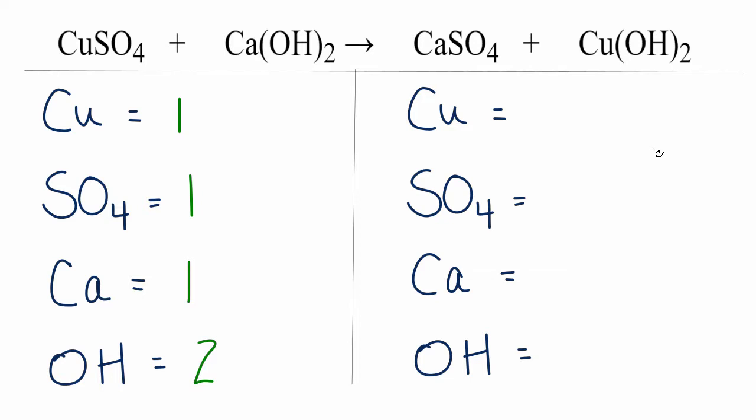So over here on the products, it gets a little confusing because we have Ca and Cu, so we want to be really careful. I have one copper, I have sulfates, just one sulfate group, Ca, I have one of those, and then the hydroxide, I have two.